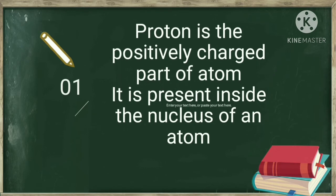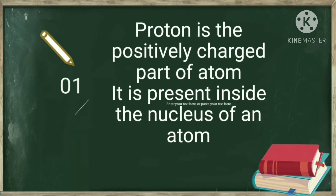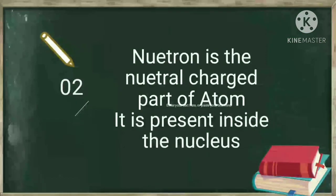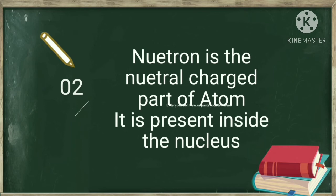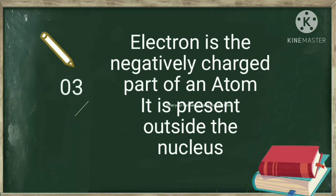The second one is neutron. It is the neutrally charged particle of an atom. Neutrons are also present inside the nucleus.